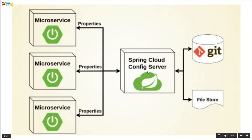To overcome this problem we have Spring Cloud Config Server. In this approach, the Spring Cloud Config Server manages all the property files for each microservice. Whenever we need to change any configuration file, we come to only one place and change the respective file. With Spring Cloud Config, the changed property value will automatically come into effect for that particular microservice — no restart needed.